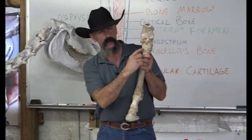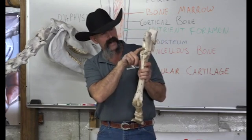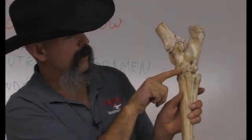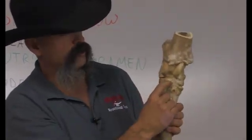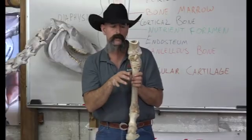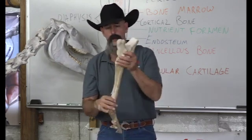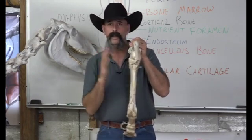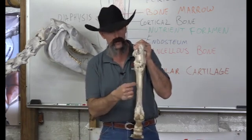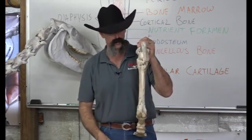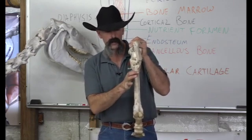Between the distal end of the talus and calcaneus and the top of the central tarsal and fourth tarsal is the proximal intertarsal joint. Between the central tarsal and third tarsal is the distal intertarsal joint. Between the tarsals and the top of the metatarsus is the tarsal metatarsal joint. Below that, the lateral splint bone is the largest splint bone in the horse — the fourth metatarsal — and the medial splint bone, the second metatarsal, is smaller. The cannon bone is the third metatarsal.